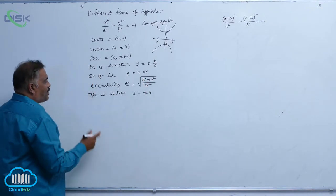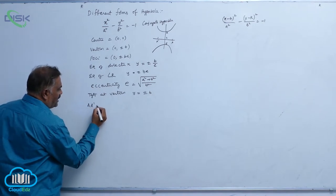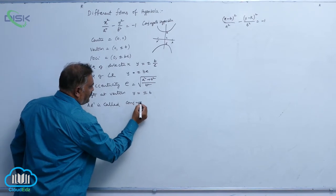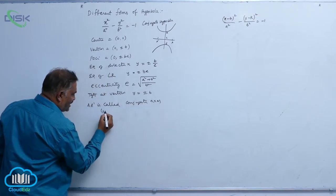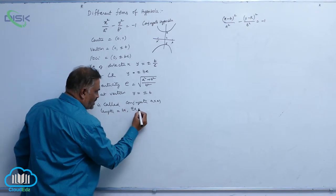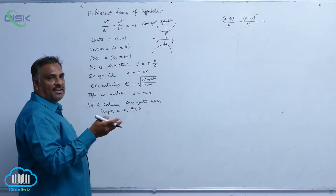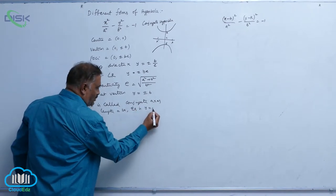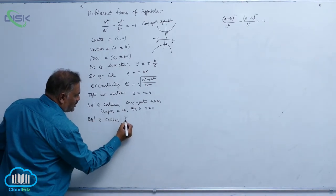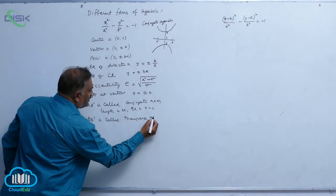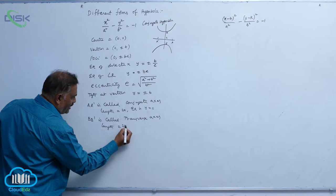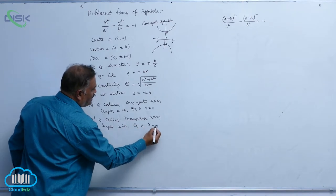A very important point: AA' is called the conjugate axis. The conjugate axis length is equal to 2a, and since it is along the x-axis, the equation is y = 0. BB' is called the transverse axis. Its length is equal to 2b, and the equation is x = 0.